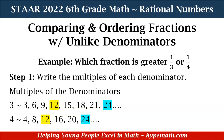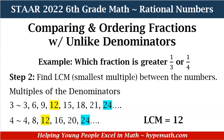The multiples of 4 are 4, 8, 12, 16, 20, 24, and so on. Step 2: we need to find the LCM, or the smallest multiple between the numbers. As you can see, between 3 and 4, they share two multiples in our example — 12 and 24. We want to find the smallest multiple, and that is 12. So our least common multiple is equal to 12.